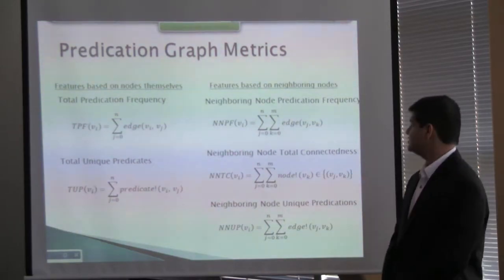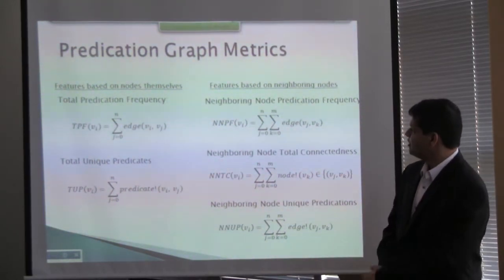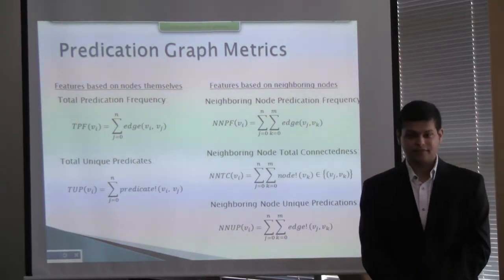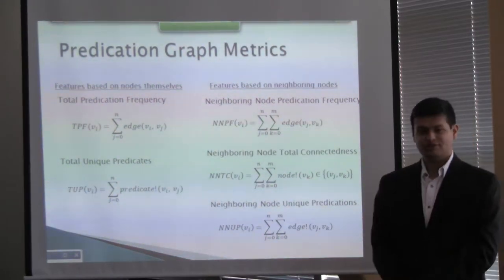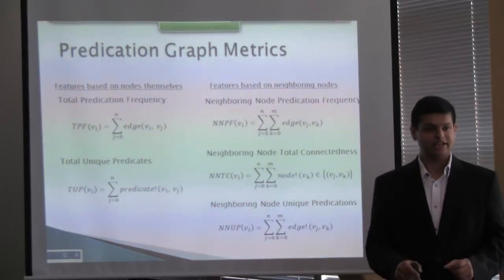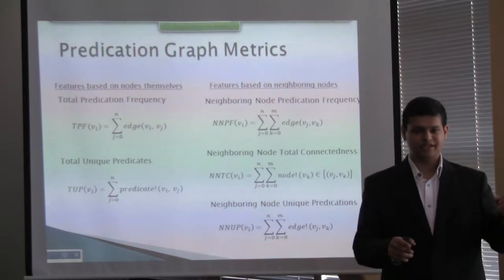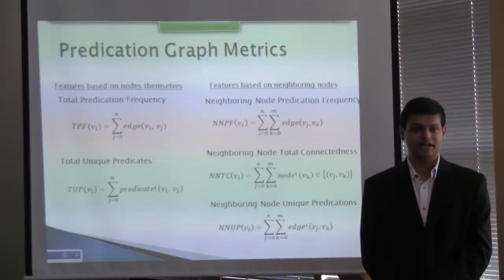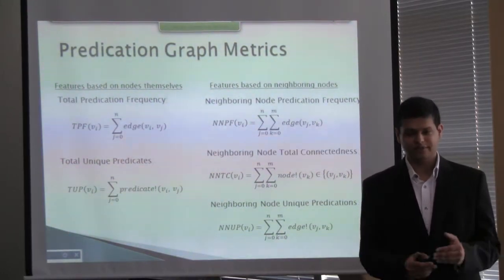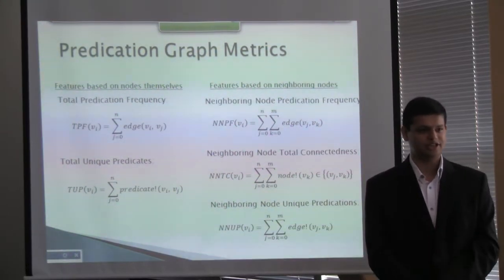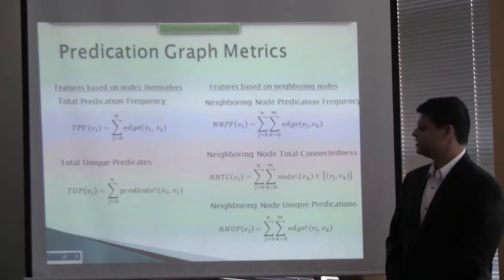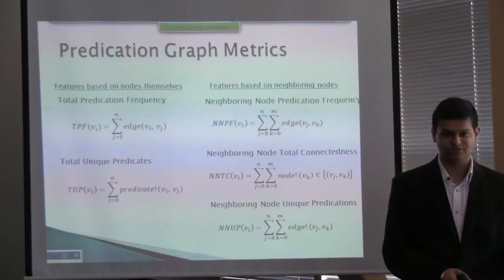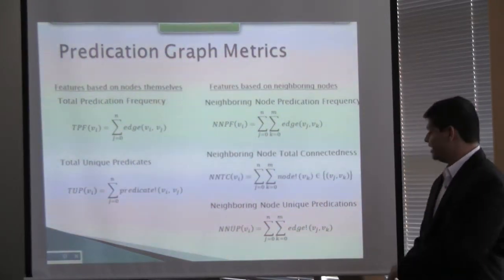In the case of predication graph metrics or features, there are two main ideas: features based on nodes themselves, and features based on how those nodes are connected to their neighbors. First is total predication frequency — counting the number of edges connected to, say, Alzheimer's: how many times is a given node connected in the Alzheimer's literature. Second is total unique predicates — how many different ways a node is connected, not counting duplicate predicate types.